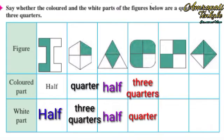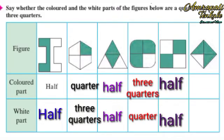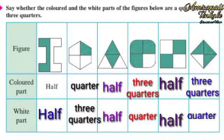See in the next figure: half colored part and half white part. See in the next figure: three quarters of the colored part and a quarter of the white part.